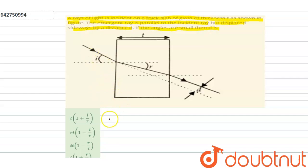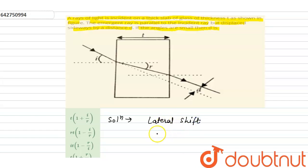then d is? So, the solution for this is: we can calculate lateral shift d from the formula t divided by cos r, multiplied by sin(i minus r).